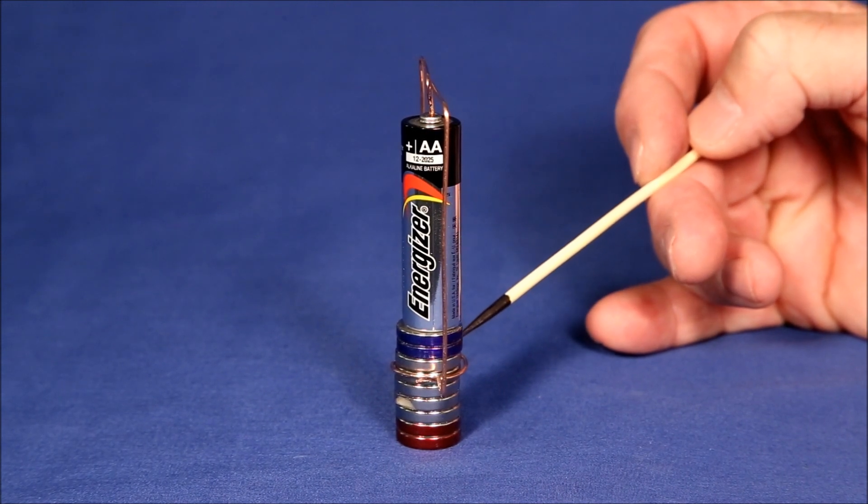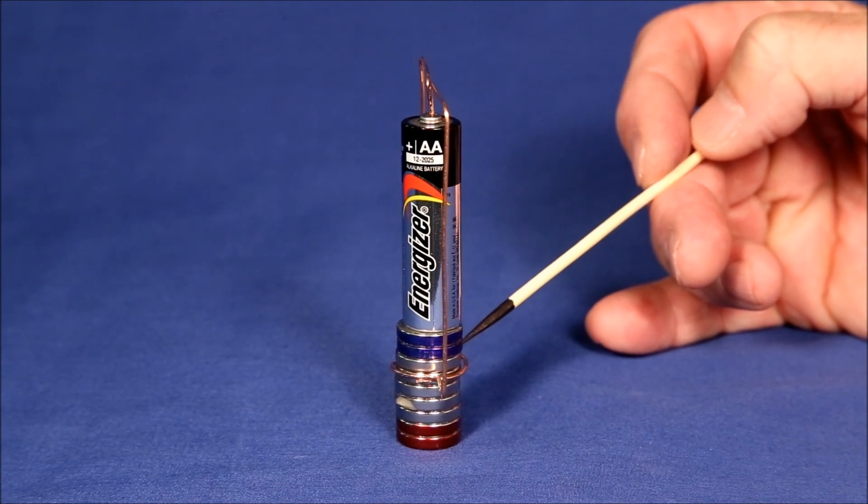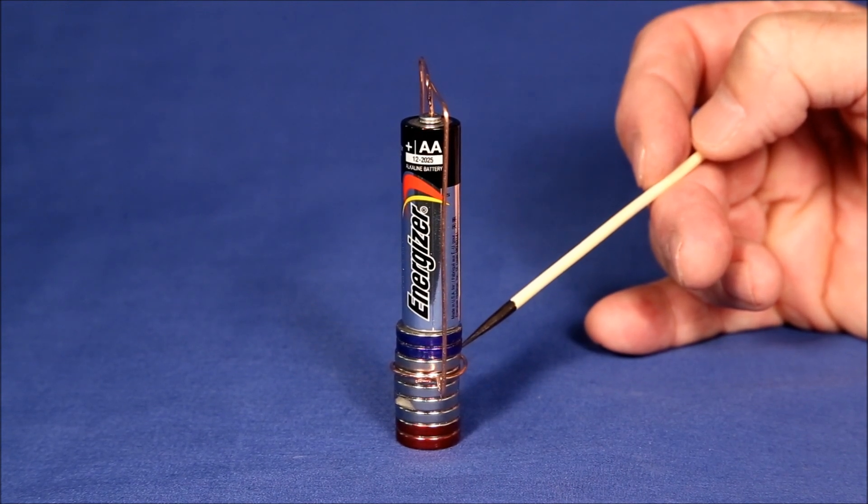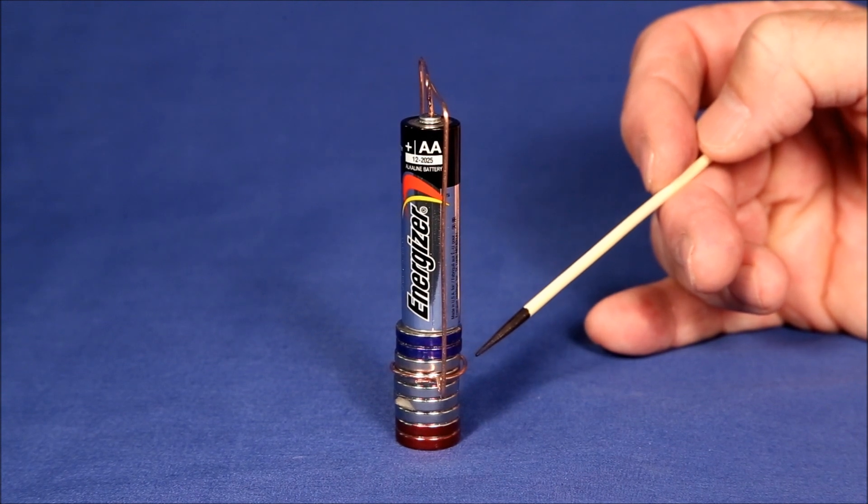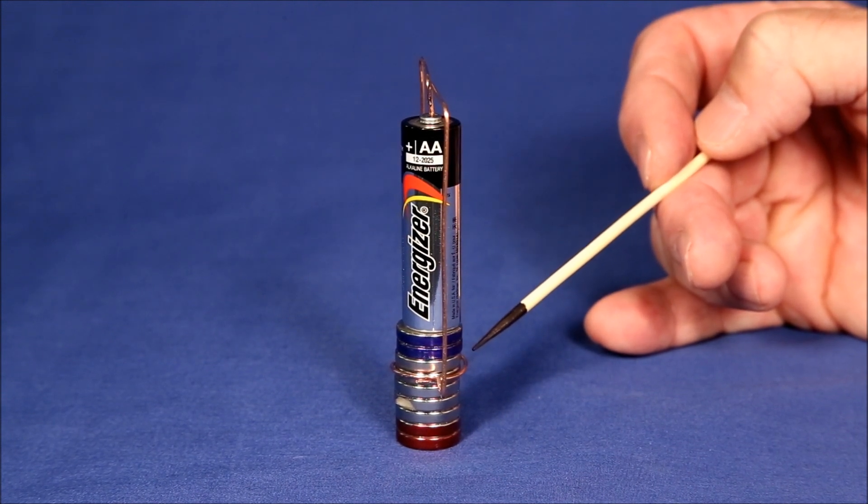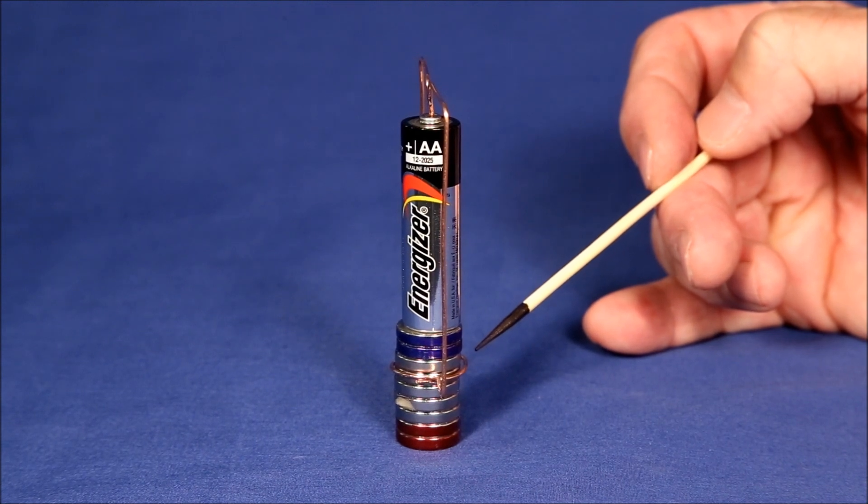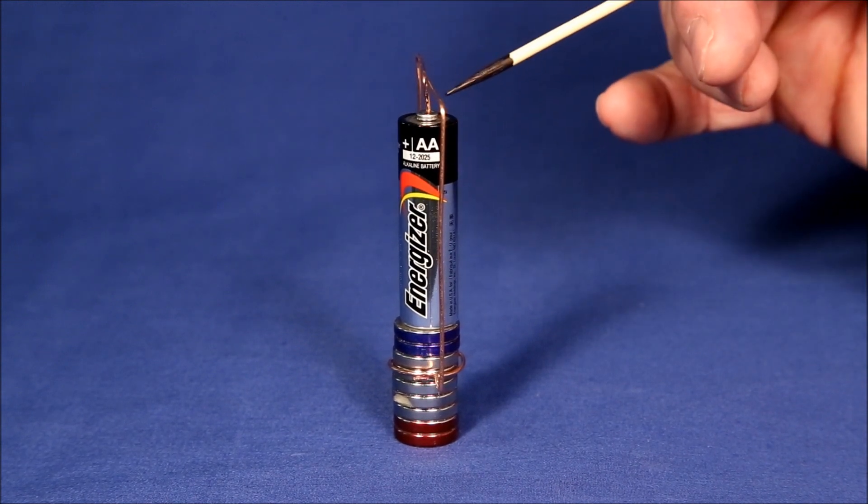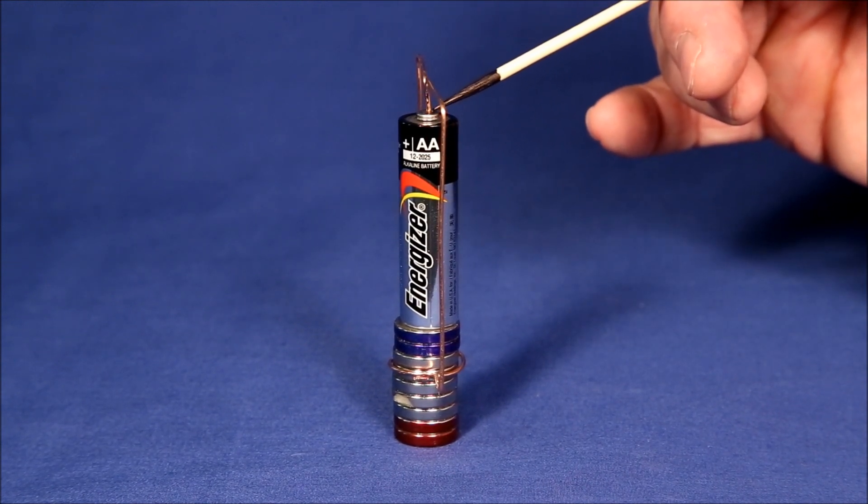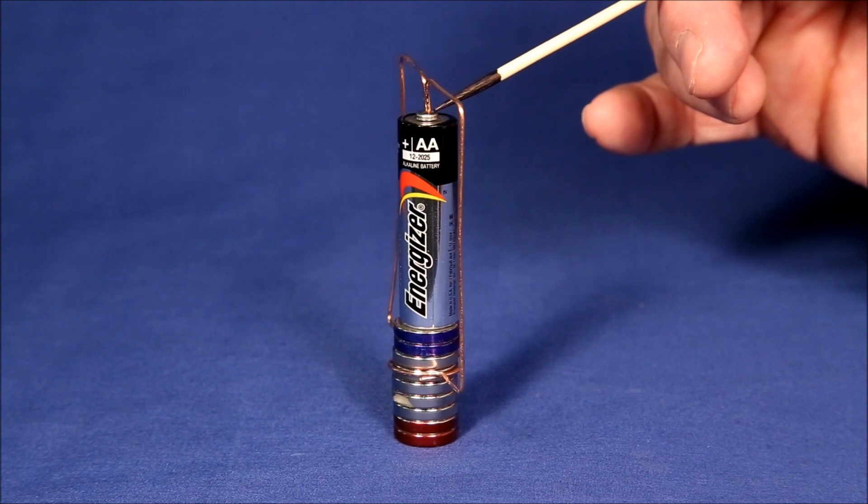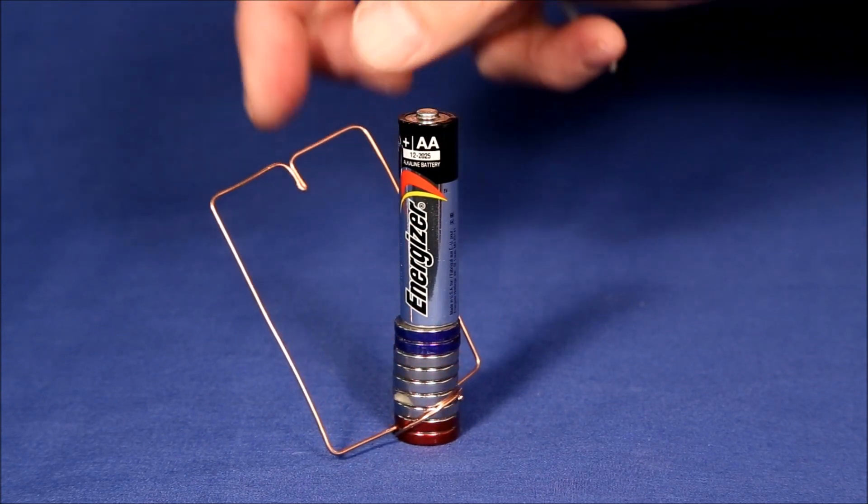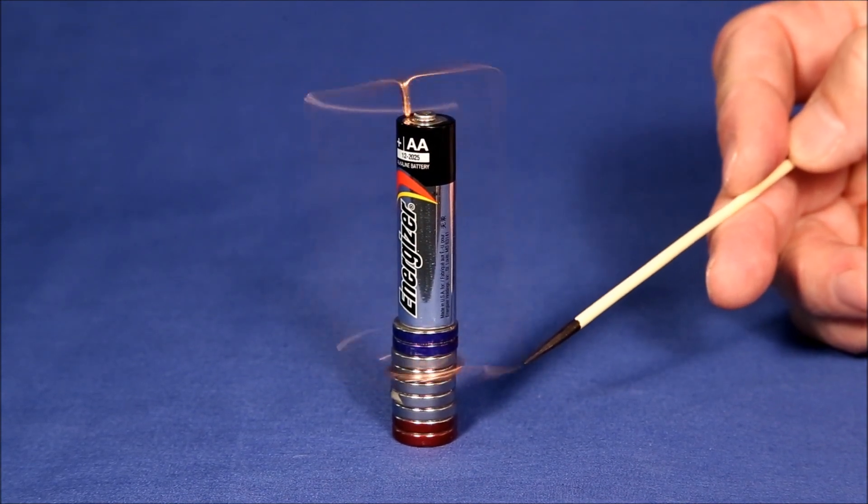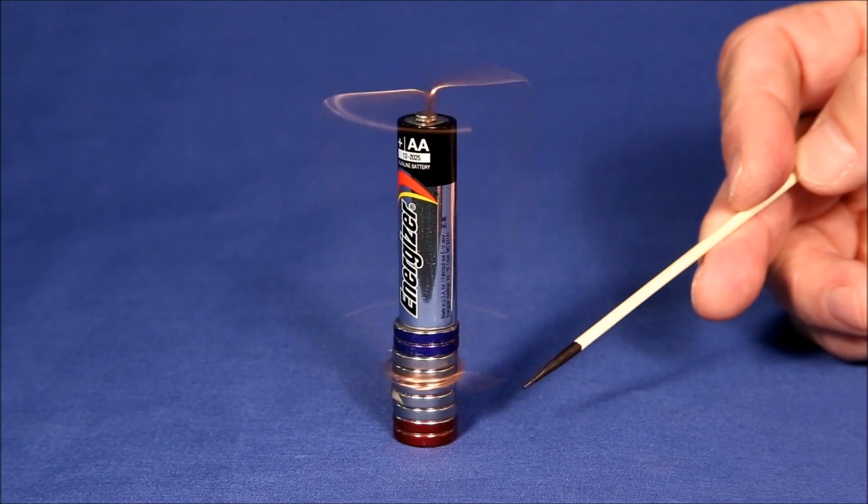Adjusting the tension of the contacts to get a homopolar motor running can be an exercise in frustration. A little too hard, there's too much drag, it doesn't go. Too little pressure, and you won't have good contact and won't run. If after fighting for a while, not being able to get it to run, try this. Instead of forcing it to run on the dimple you created in the top electrode, move it off to the side. And many times that slight change in angle will give you just the contact you need for it to run smoothly.